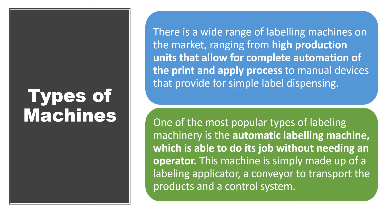When we talk about the machines, it can be a simple machine requiring manual or operator involvement, or it can be a fully automatic machine, or it can be a semi-automatic machine whereby some parts of the operations are done automatically and the rest are done manually. There is a wide range of labeling machines available, from high production units that allow complete automation of the print and apply process. They are basically divided into three categories: automatic labeling machines which do not need any operator, semi-automatic machines where partial operations are automatic and partial are done by the operator, and manual machines which are fully dependent on the operator.